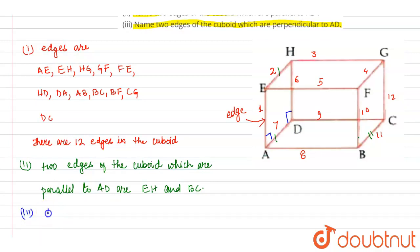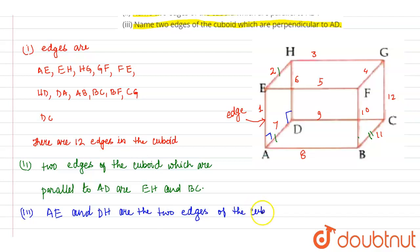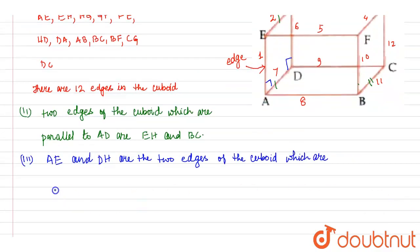So we can write: AE and BH are the two edges of the cuboid which are perpendicular to AD. This is the answer. Thank you.